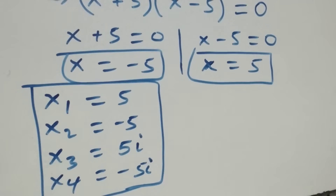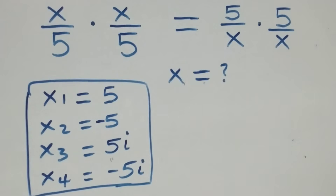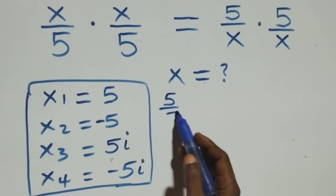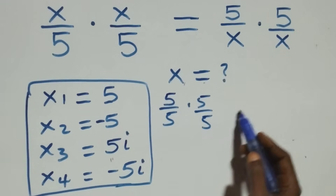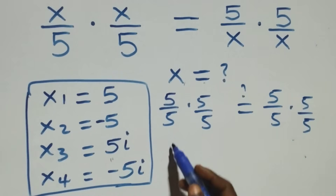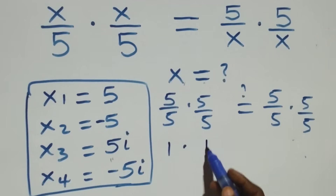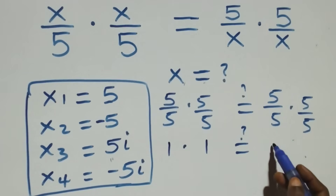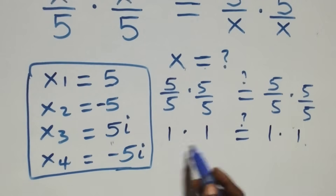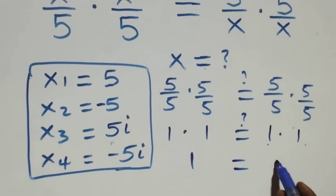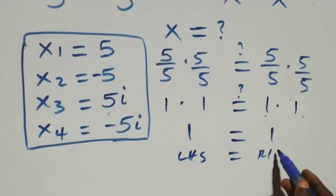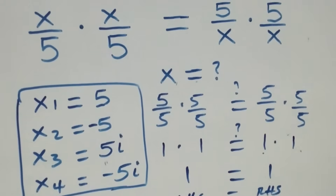Let's check if these satisfy the given problem. Substituting x equals five: five over five times five over five. On the right side also five over five times five over five. Five over five is one, times one equals one, which equals one times one equals one. Left hand side equals right hand side, so x equals five satisfies the given problem.